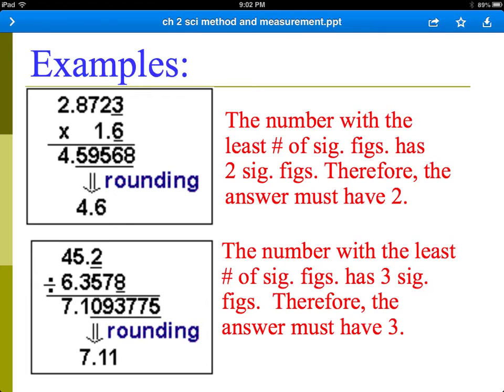In the second example, we're dividing. So we're going to divide the number, and then we're going to examine each part. This one has three significant figures, and this one has five significant figures. Therefore, our answer must be rounded to the number that has the least number of significant figures. That would be three. So 7.11 is the correct answer.